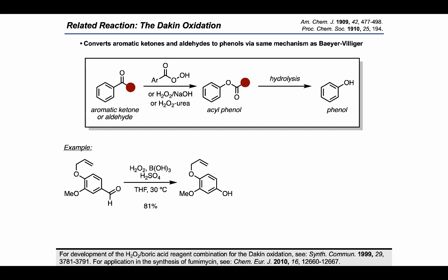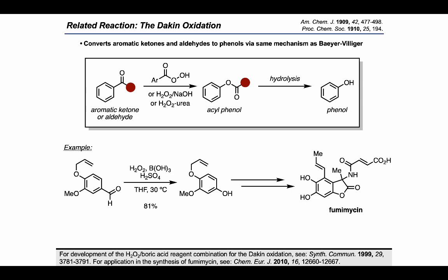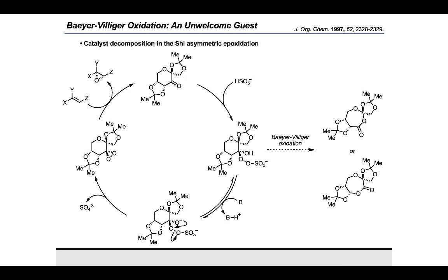That phenol product formed the core of fumamycin in a 2010 total synthesis. It's also worth pointing out that sometimes we can see a Bayer-Villiger even when that's not what we're trying to do. One classic example is the Shi epoxidation, where a chiral ketone catalyst generates a tetrahedral intermediate that needs to collapse to form a dioxirane for productive asymmetric epoxidation. However, the tetrahedral intermediate can undergo Bayer-Villiger type rearrangement to form esters, which are dead ends for the catalyst.